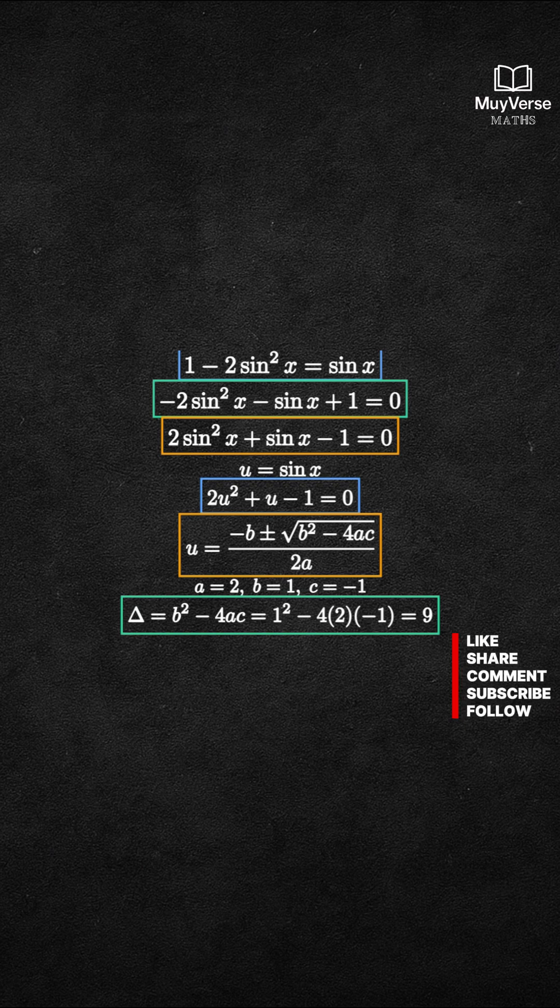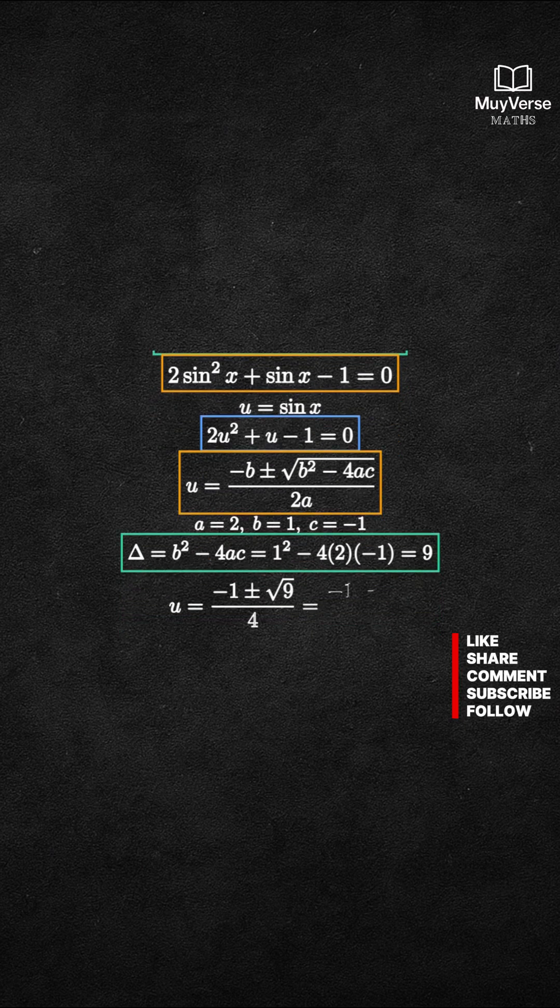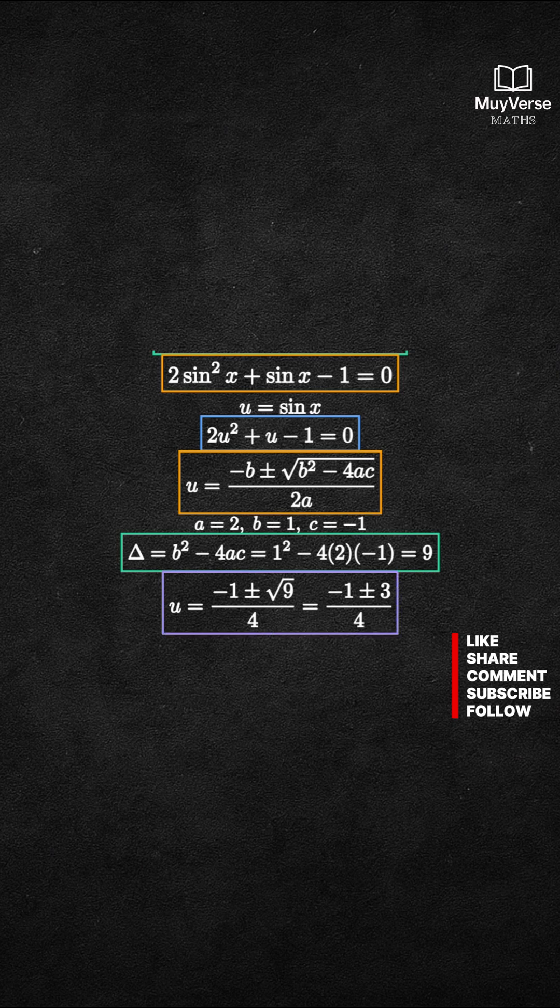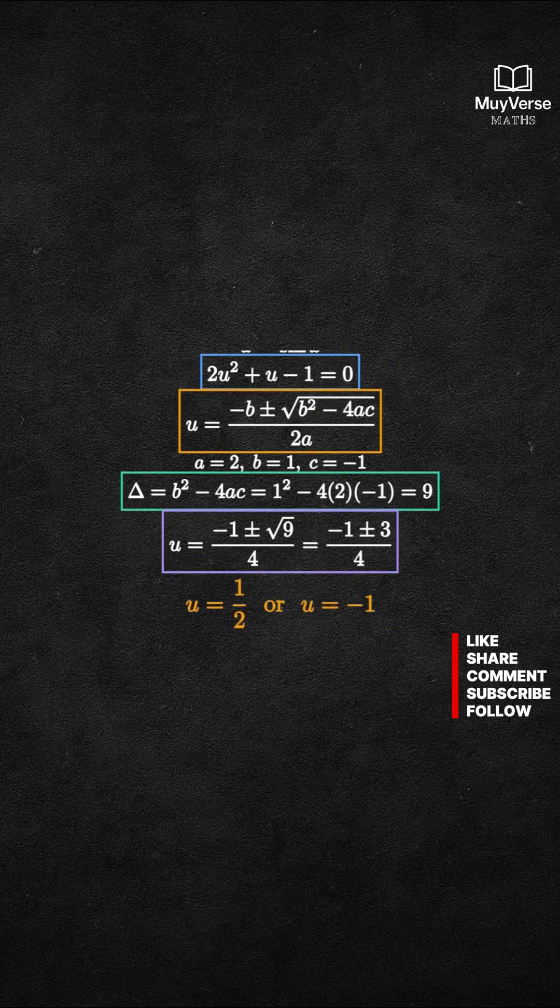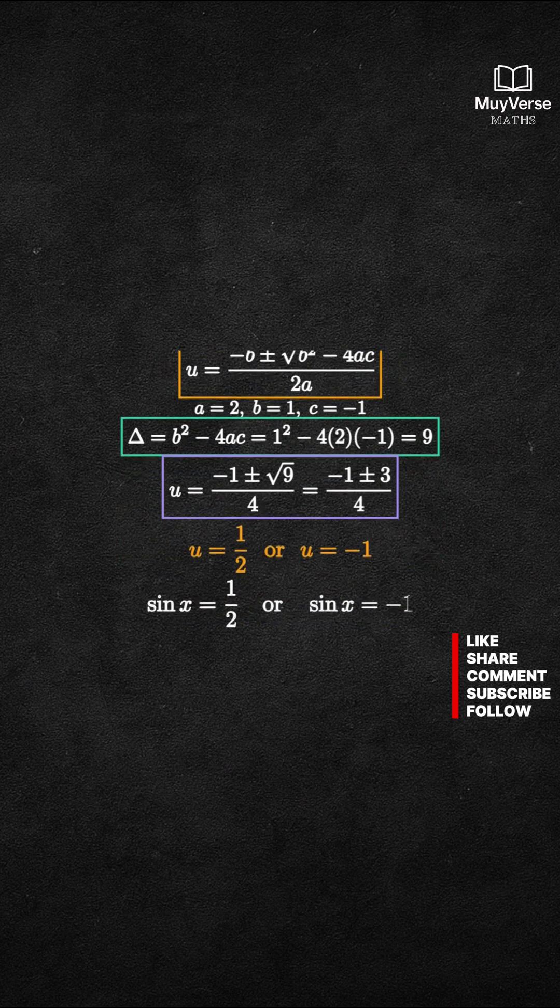Take the square root and simplify. u equals negative 1 plus or minus 3 all over 4. So the two values are 1 half and negative 1. That means sine x equals 1 half or sine x equals negative 1.